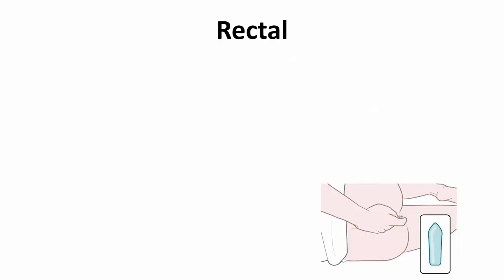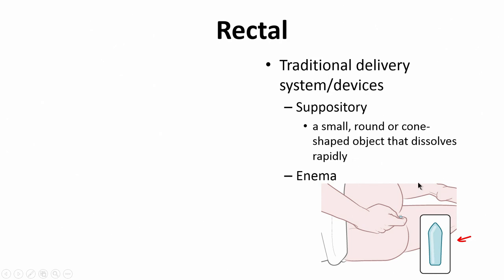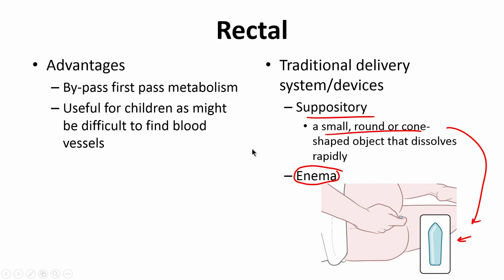Let us talk about rectal delivery. As the name suggests, this is delivery through the rectum and it is again not very widely used anymore — it is a very traditional form of delivery. A device called a suppository, which is a small round cone-shaped object, is inserted into the rectum. Sometimes an enema — a liquid formulation — is also used. One advantage, as mentioned, is that it bypasses first-pass metabolism because a different vein takes it to the systemic circulation. It is also very useful for small children and babies, because it is very hard to find a blood vessel in them and they are not compliant enough to hold drugs in their mouths.